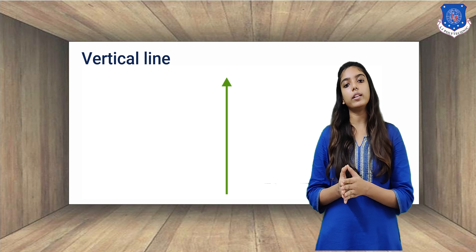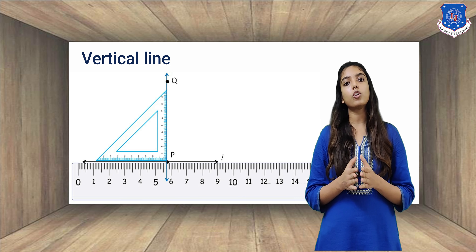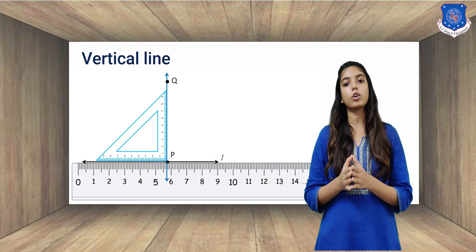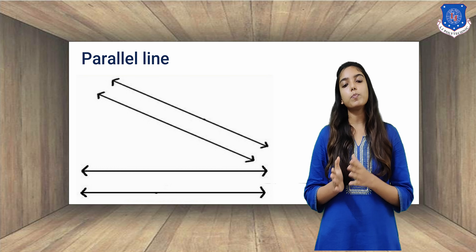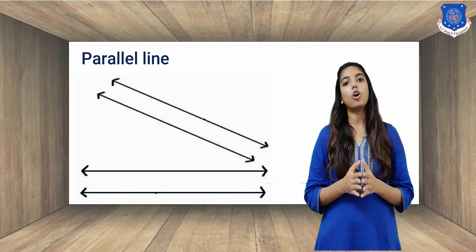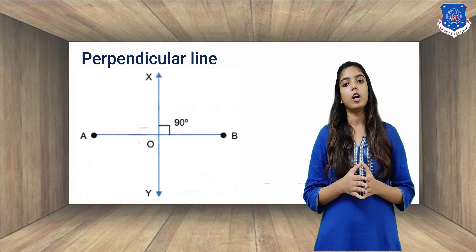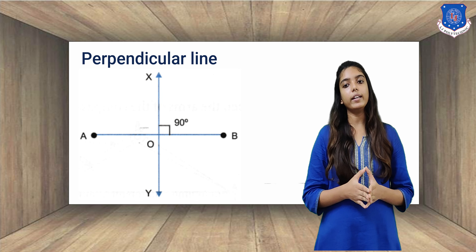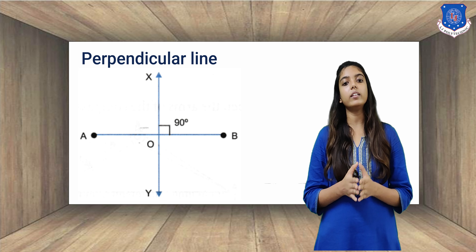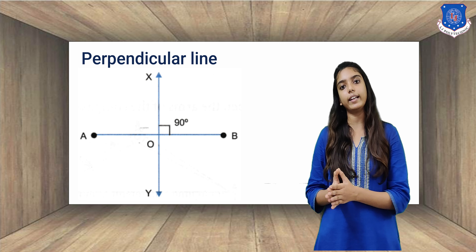What is a vertical line? A line that makes a 90-degree angle with the horizontal is called a vertical line. A vertical line is one that runs from top to bottom. What is a parallel line? The line in which the shortest distance between them remains constant is called a parallel line. What is a perpendicular line? Perpendicular lines are defined as two lines that meet at an intersection point and make a right angle or 90-degree angle.